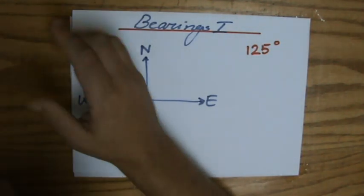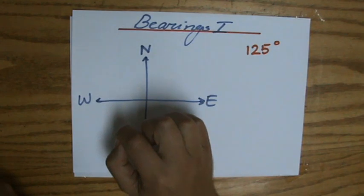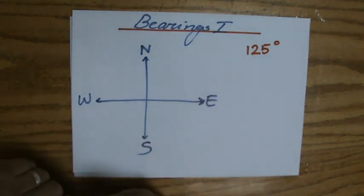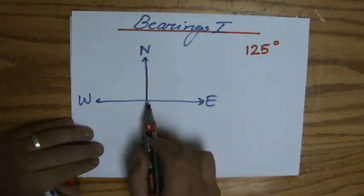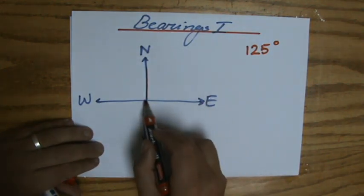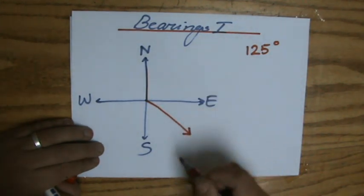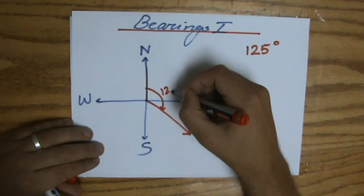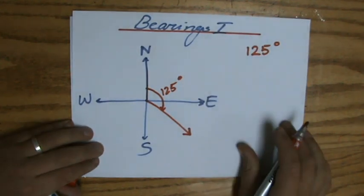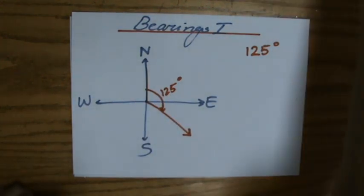A bearing is you always start counting from the north in a clockwise direction. So the bearing of 125 degrees from the north, and then 125 degrees that's 90 so a little bit more than that, so that would be roughly that way. So that is 125 degrees from the north in a clockwise direction.